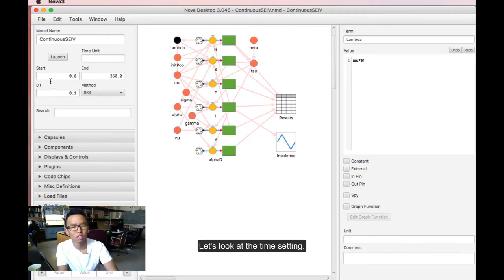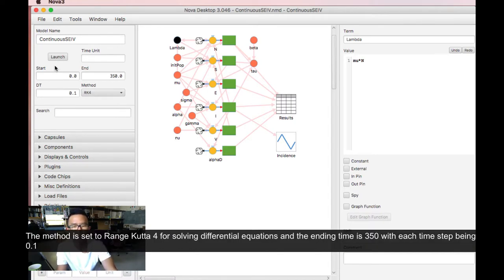Let's look at the time setting. Here the method is set to Runge-Kutta 4 for solving differential equations. And the ending time is 350 with each time step being 0.1.